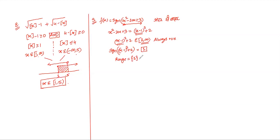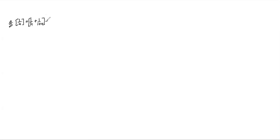Now let's discuss the greatest integer sum problem from last time. We had: Σ [1/4 + k/100] for k = 0 to 150. The key is to figure out when the expression inside the brackets crosses an integer. 1/4 = 0.25. When does 1/4 + k/100 reach 1? When k/100 = 3/4, i.e., k = 75.